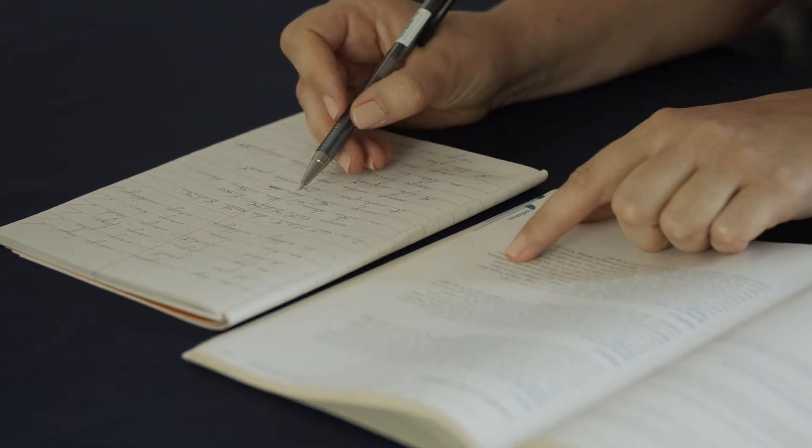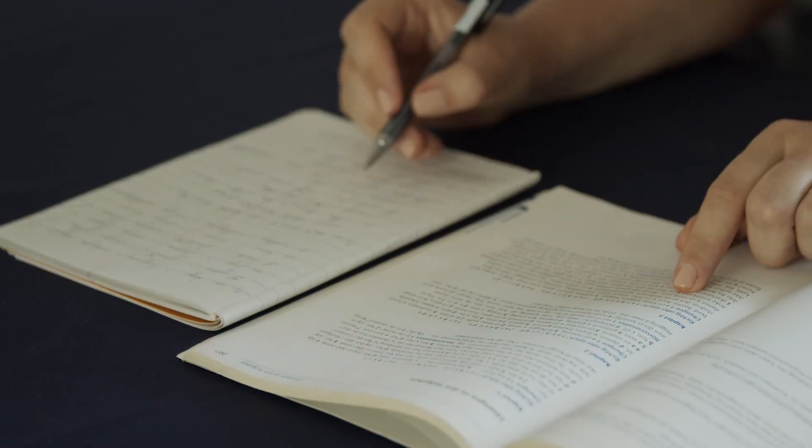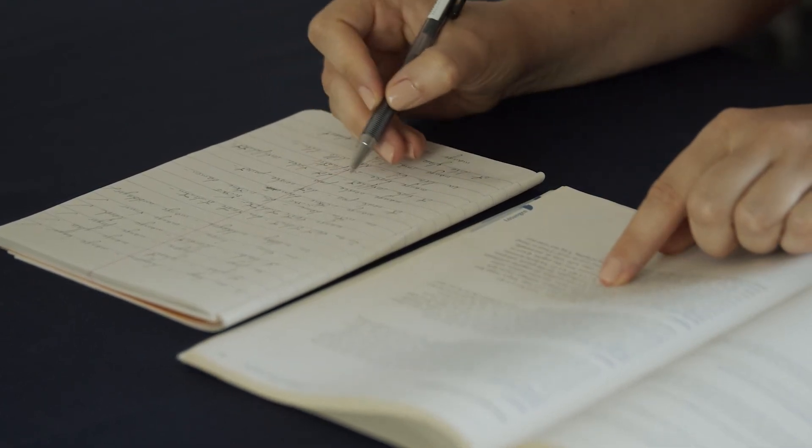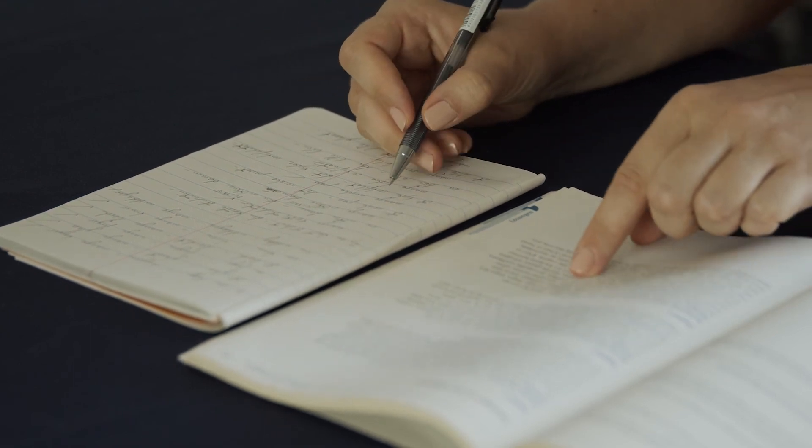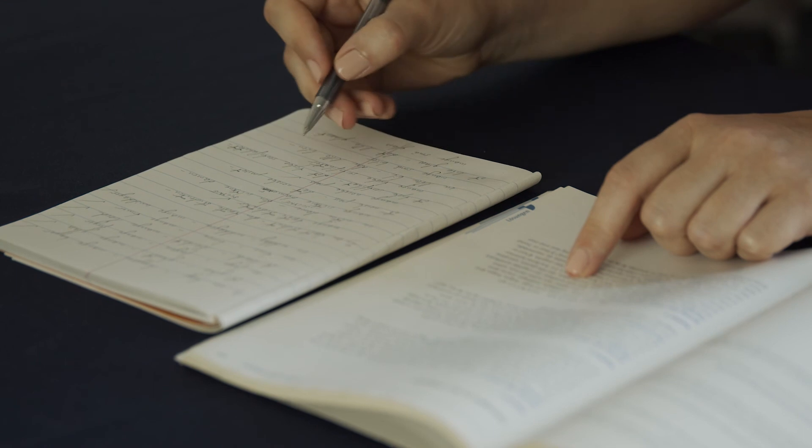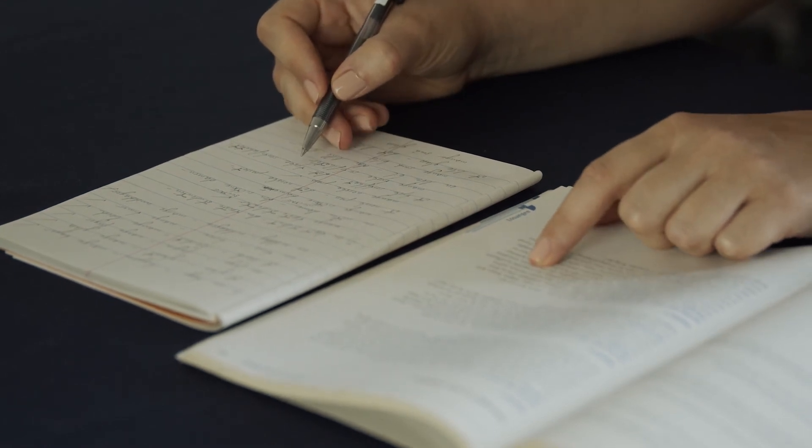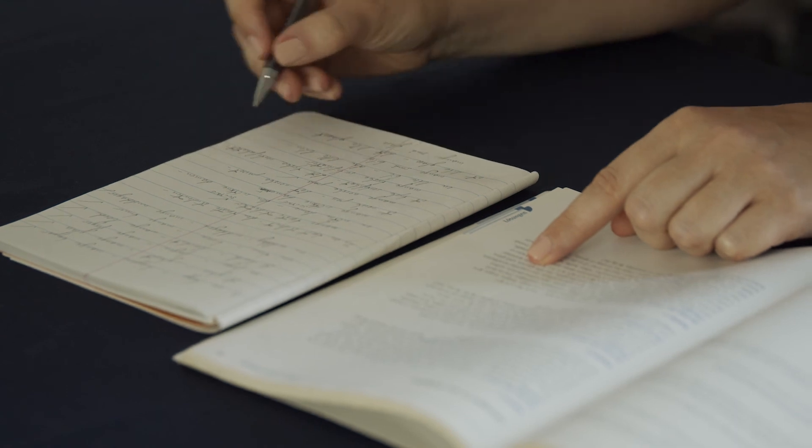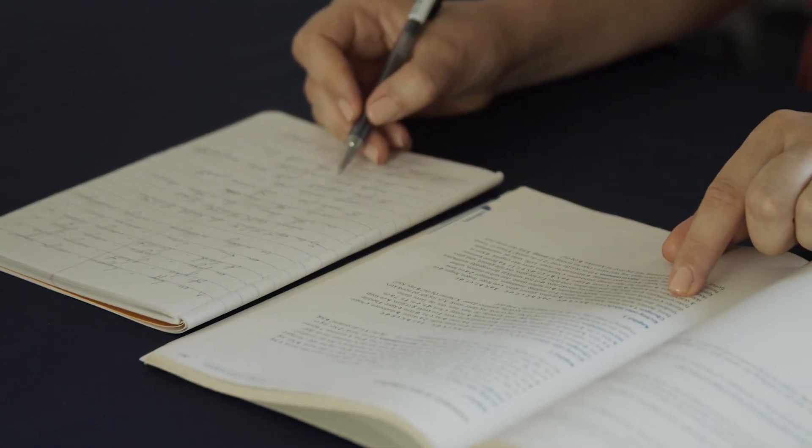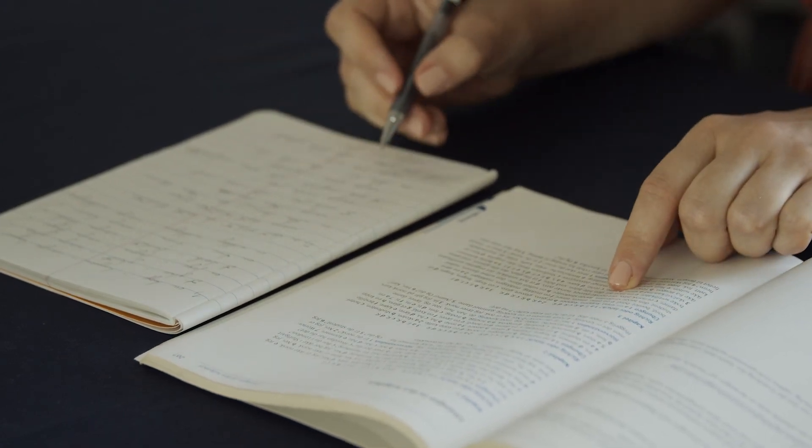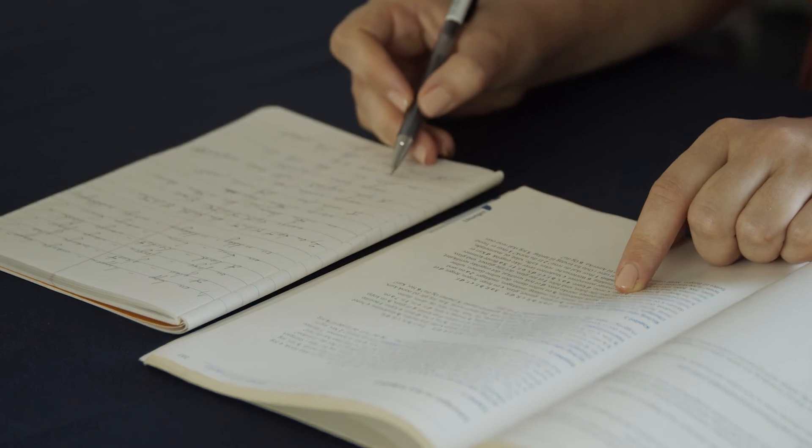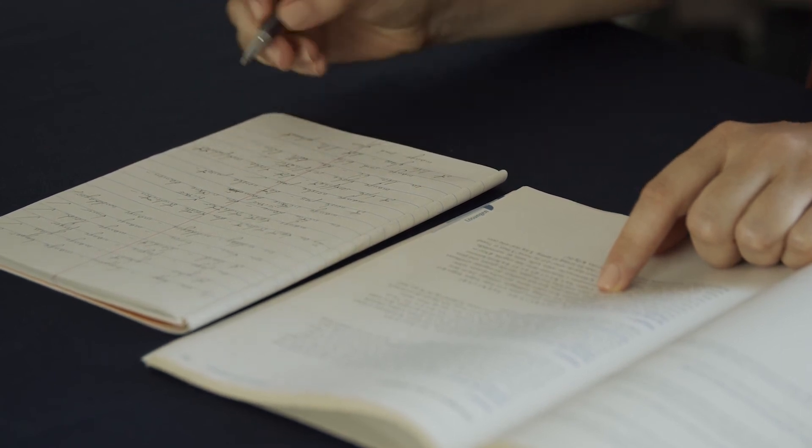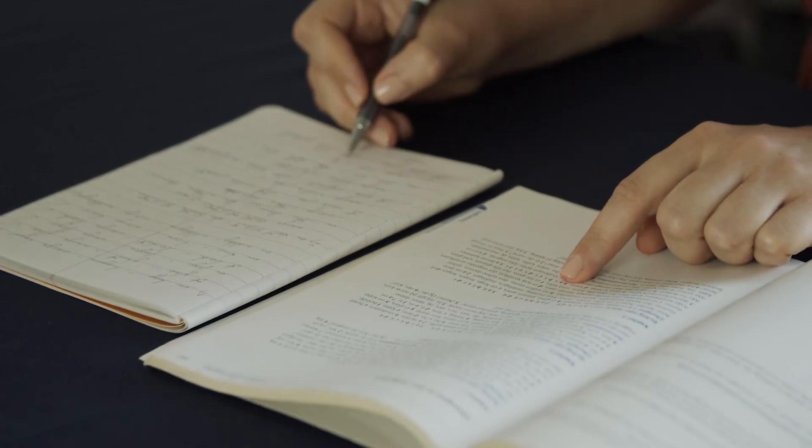Then we have et norsk pass, det norske passet, norske pass. Et tysk sertifikat. I don't think we want an English certificate, we still want the German one. Et tysk sertifikat. Et liten bil, den lille bilen. Små biler.